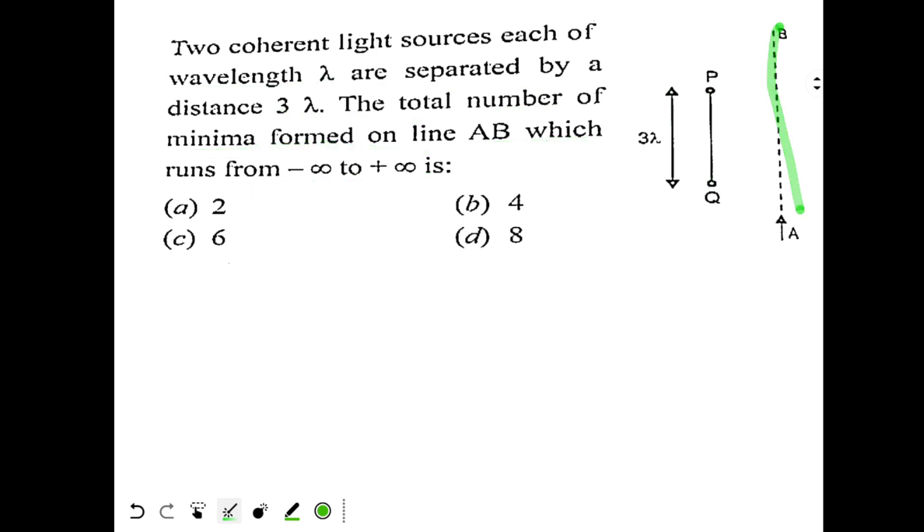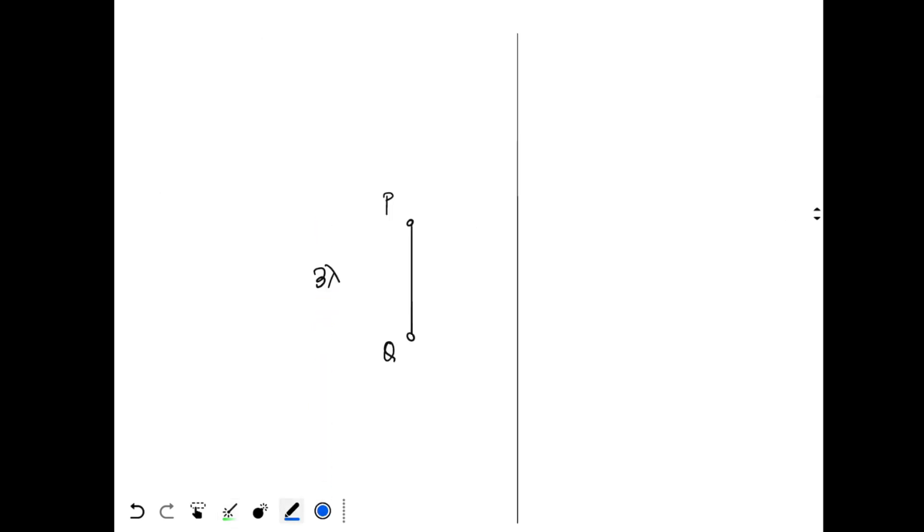So that's very easy. Here are your two sources and this is the line. Now if you look at the bisector of the line PQ, and if I draw perpendicular from the bisector PQ, then at this point the light from P and Q is traveling equal distance, so the path difference over here will be zero. I'm writing the path difference over here, it is zero.